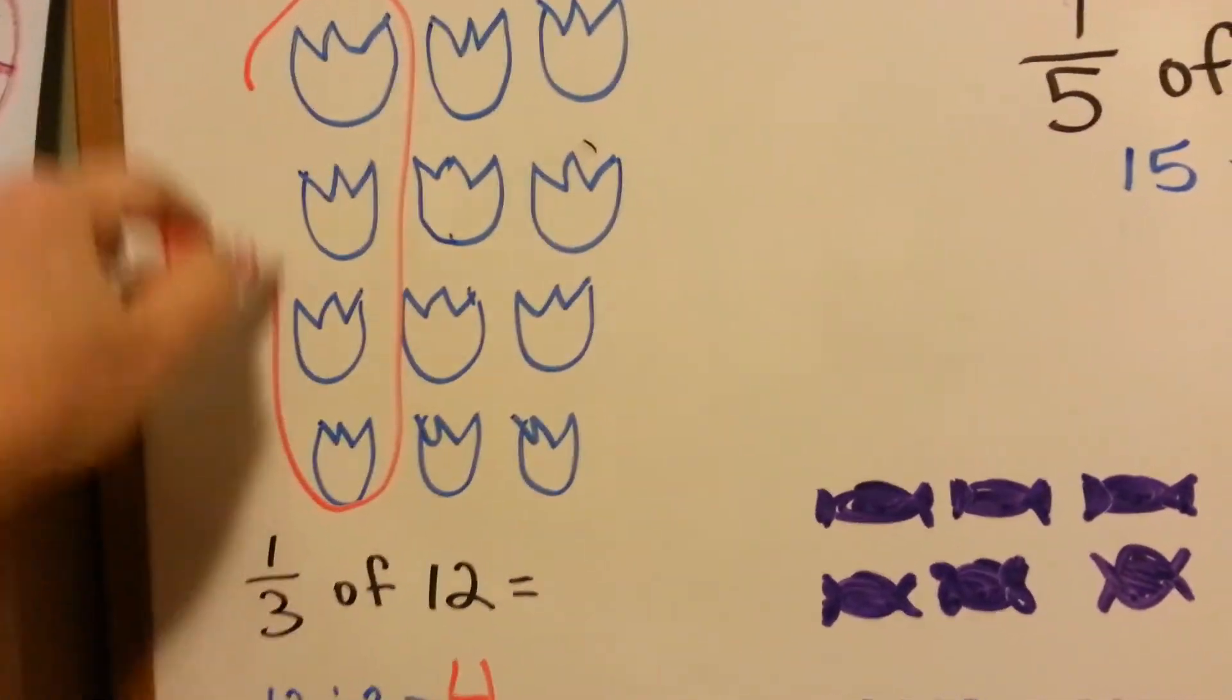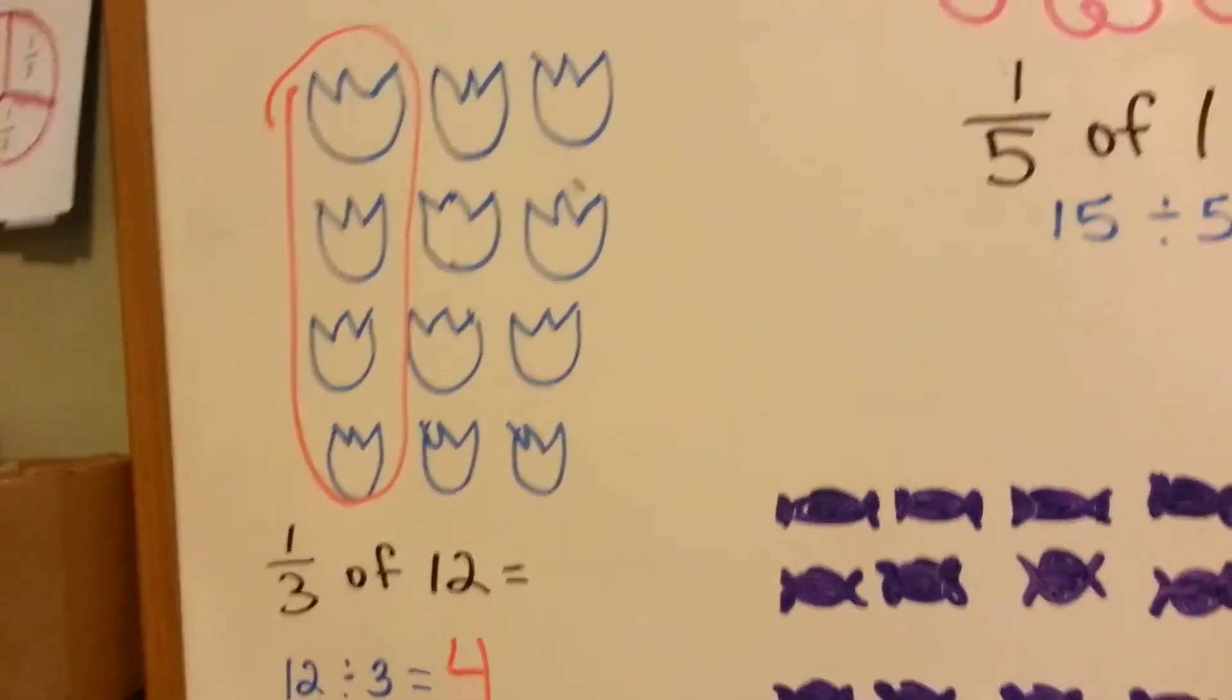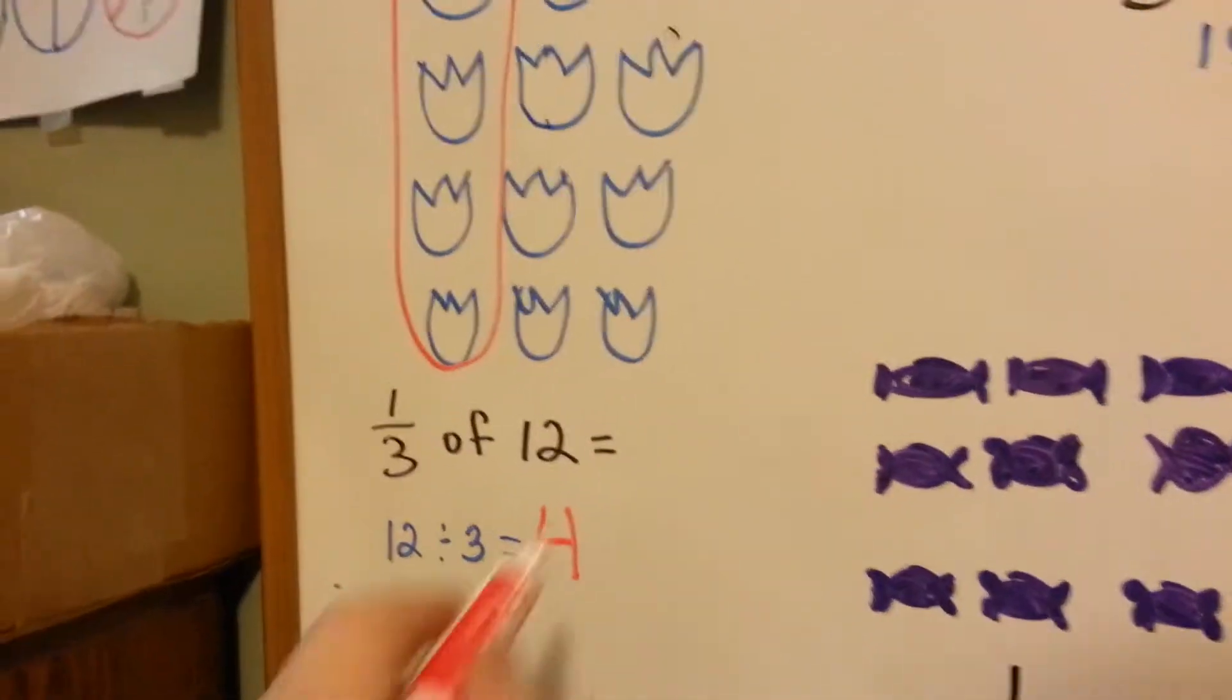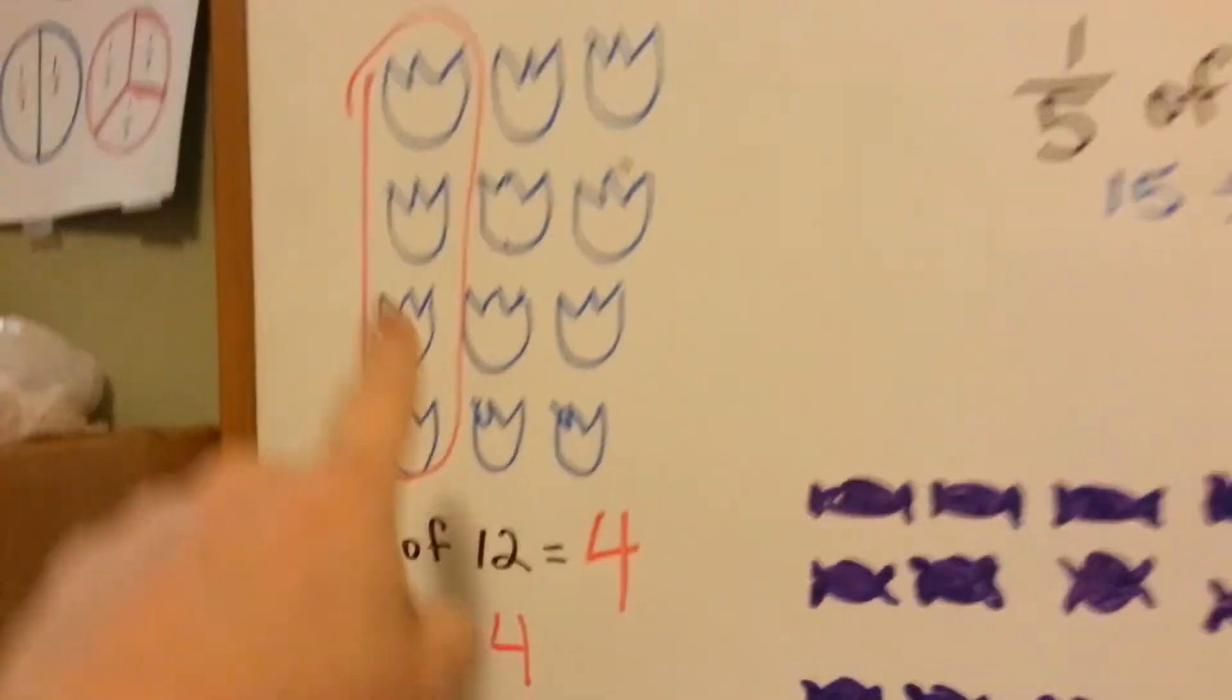So we would circle 4 tulips. See how the division helped us? One third of 12 is 4. So we circled 4.